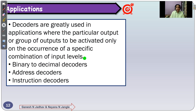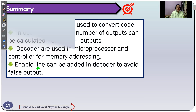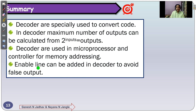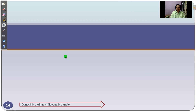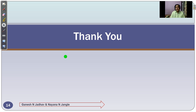The applications of decoders: decoders are used to activate a particular output or group of outputs only on the occurrence of a specific combination of input levels. Applications include binary-to-decimal decoding, address decoding in microprocessors and microcontrollers, and instruction decoding in microprocessors and microcontrollers. In summary: decoders convert codes; maximum outputs = 2 raised to N inputs; decoders are used in microprocessors for memory addressing; and an enable line can be added to avoid false outputs. Thank you — the next video will discuss the design of sequential circuits.